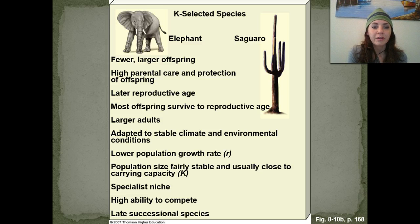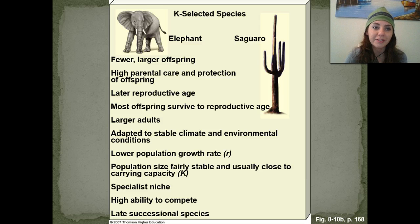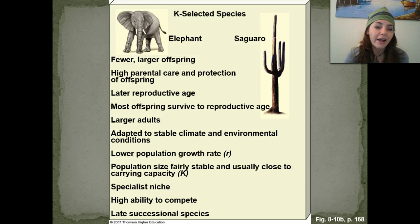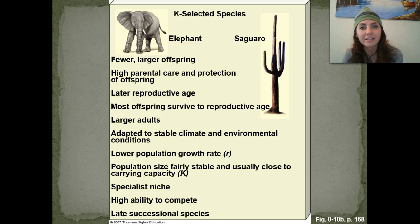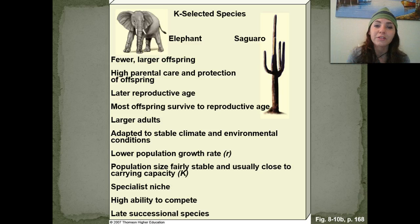K-selected adults are larger in size and adapted to stable climate and environmental conditions. They have a lower population growth rate, but population size is fairly stable and usually very close to carrying capacity unless some disaster hits. They have a specialist niche, meaning they can't move from one niche to another the way R-selected generalists can. They have a high ability to compete, and they appear very late in succession — all those R-selected species help colonize and get everything going first, and K-selected species don't enter a habitat until it's more stable.